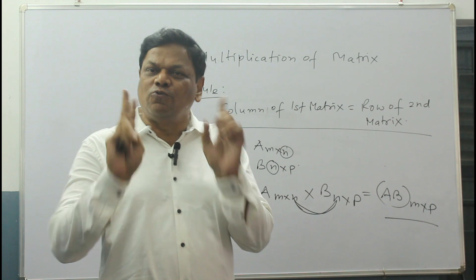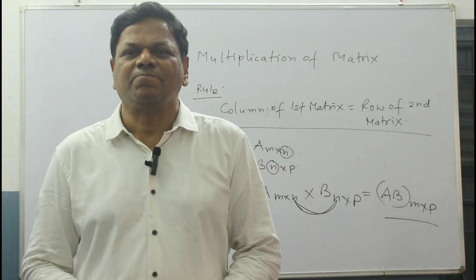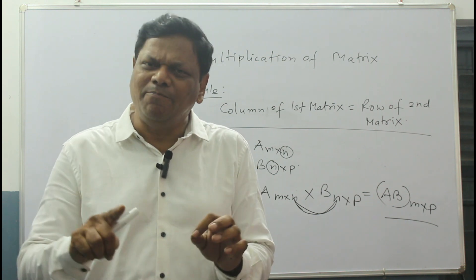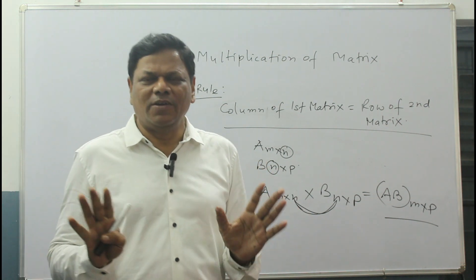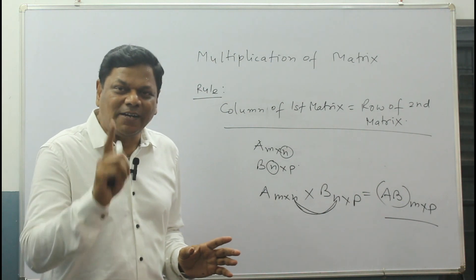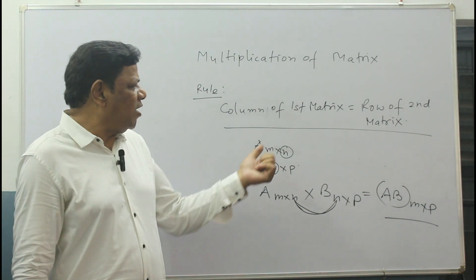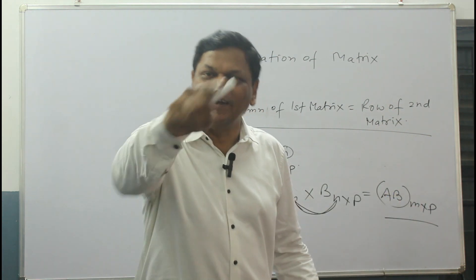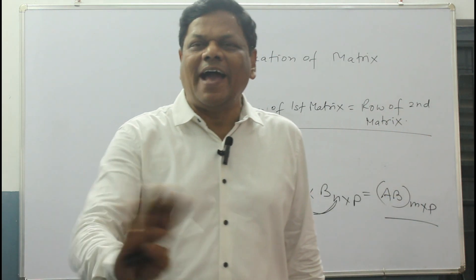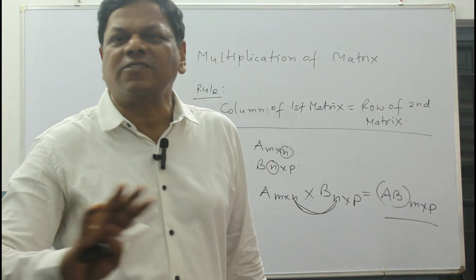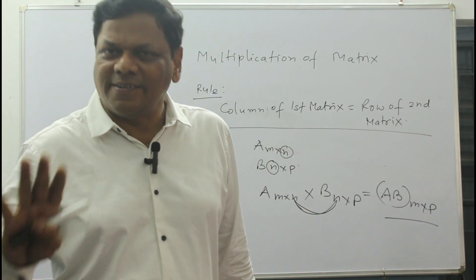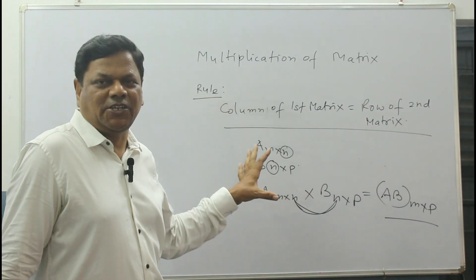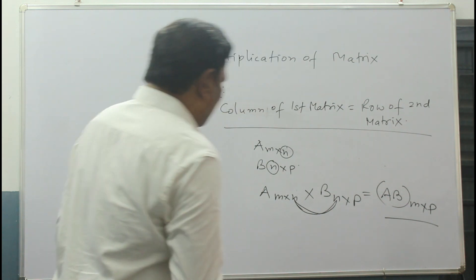I have taught two rules. One: AB not equal to BA — if both matrices are different. If they are same, then AB and BA give the same result. Second: while multiplying, check that column of first matrix equals row of second matrix. If it is satisfied, you can multiply. If it is not, multiplication is not possible.